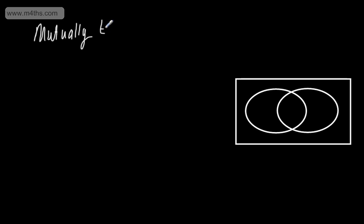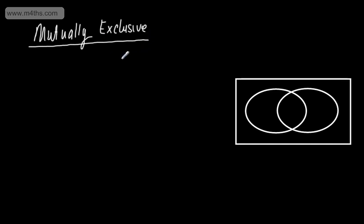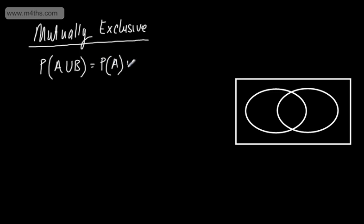Mutually exclusive events can't happen at the same time. An example might be in playing cards — we can't have a red spade, since a spade is black, so they can't happen at the same time. For mutually exclusive events, the probability of A union B is the probability of A plus the probability of B. We don't need to subtract the intersection as there's no intersection.